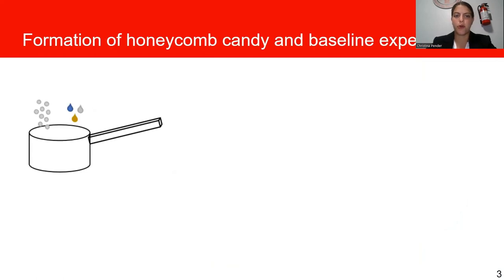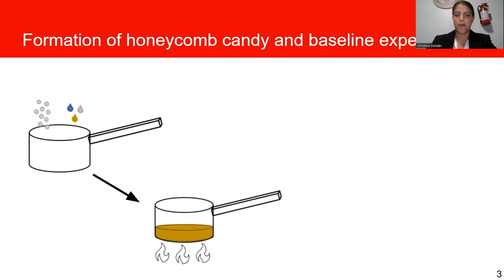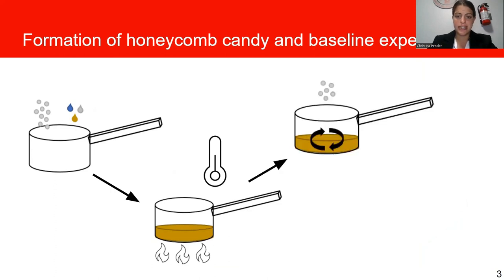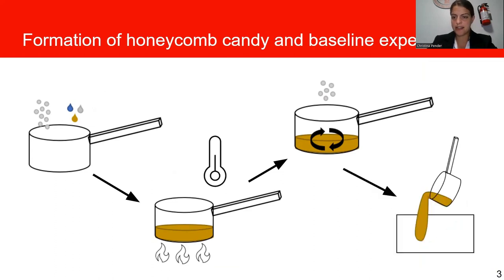First, we're going to talk about the formation of honeycomb candy in our baseline experiment. In our baseline experiment, we add sugar, water, corn syrup, and honey into a pan, and we add that pan onto some heat. We keep track of the temperature, and once it reaches 300°F, we take the pan off the heat and we add baking soda. We then mix it for 5 to 10 seconds, and then we pour that candy out onto the baking sheet.